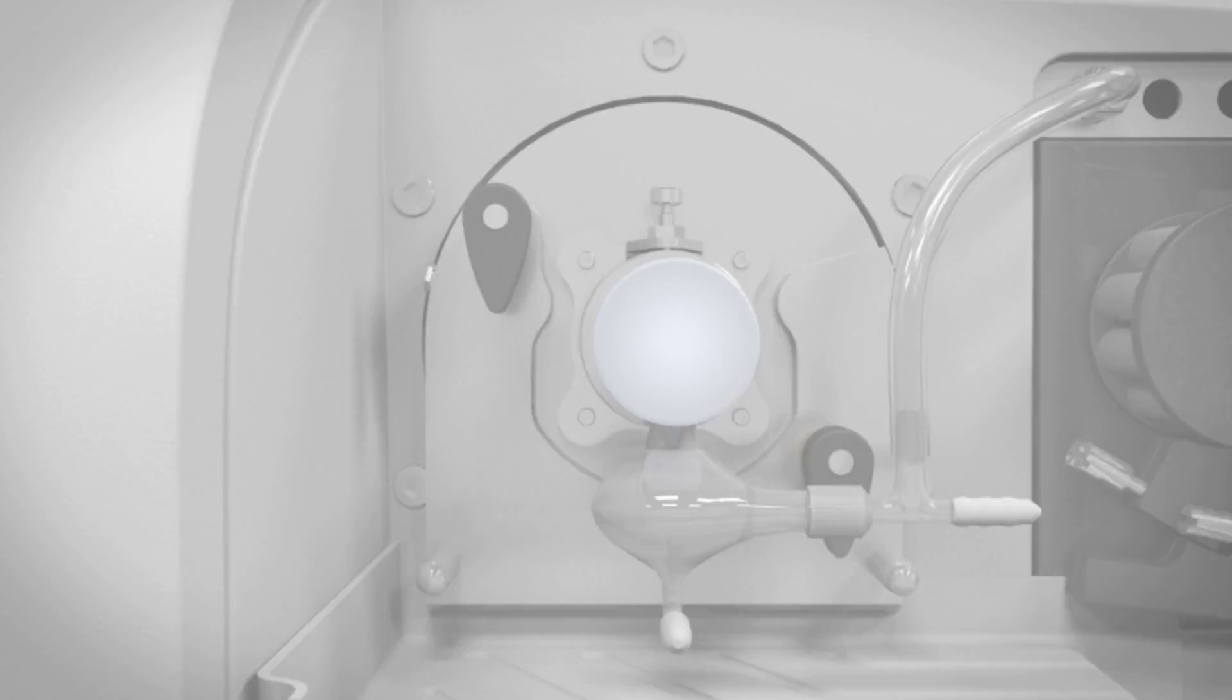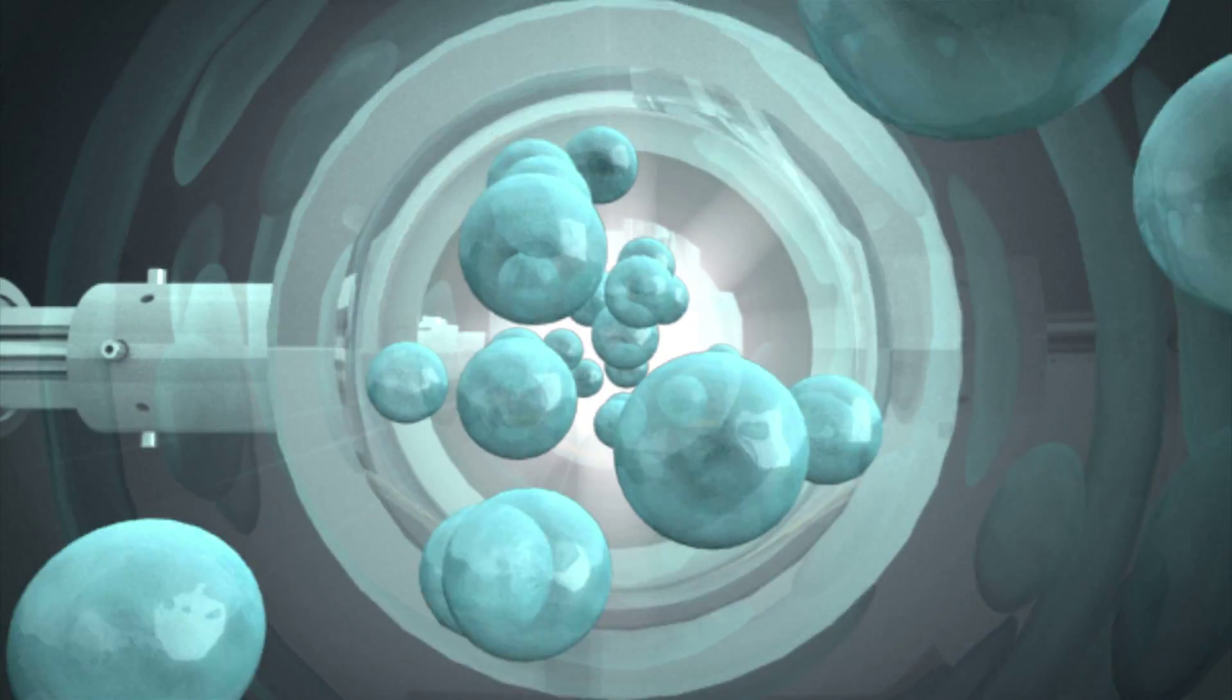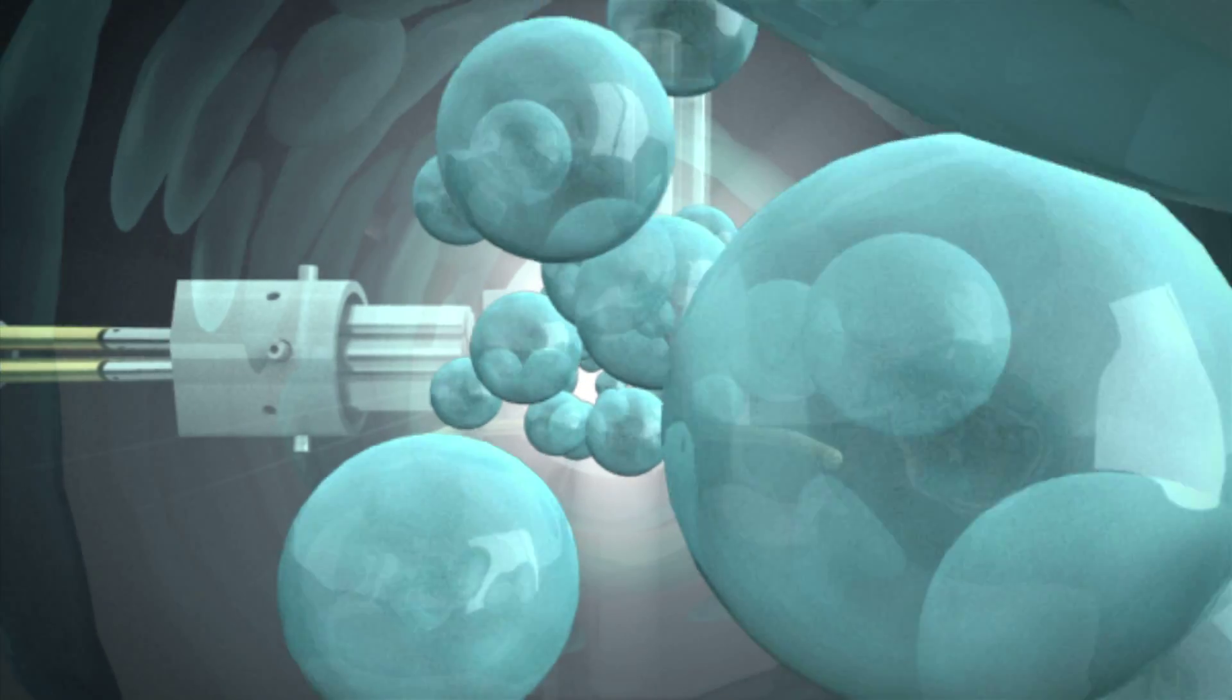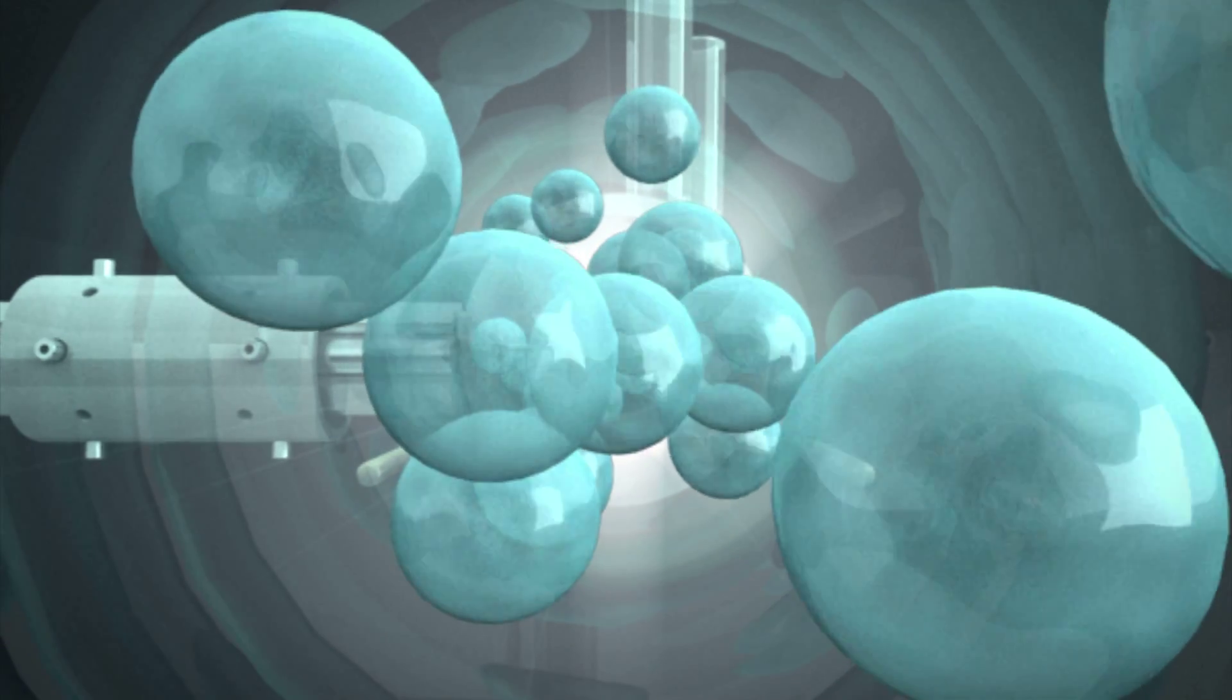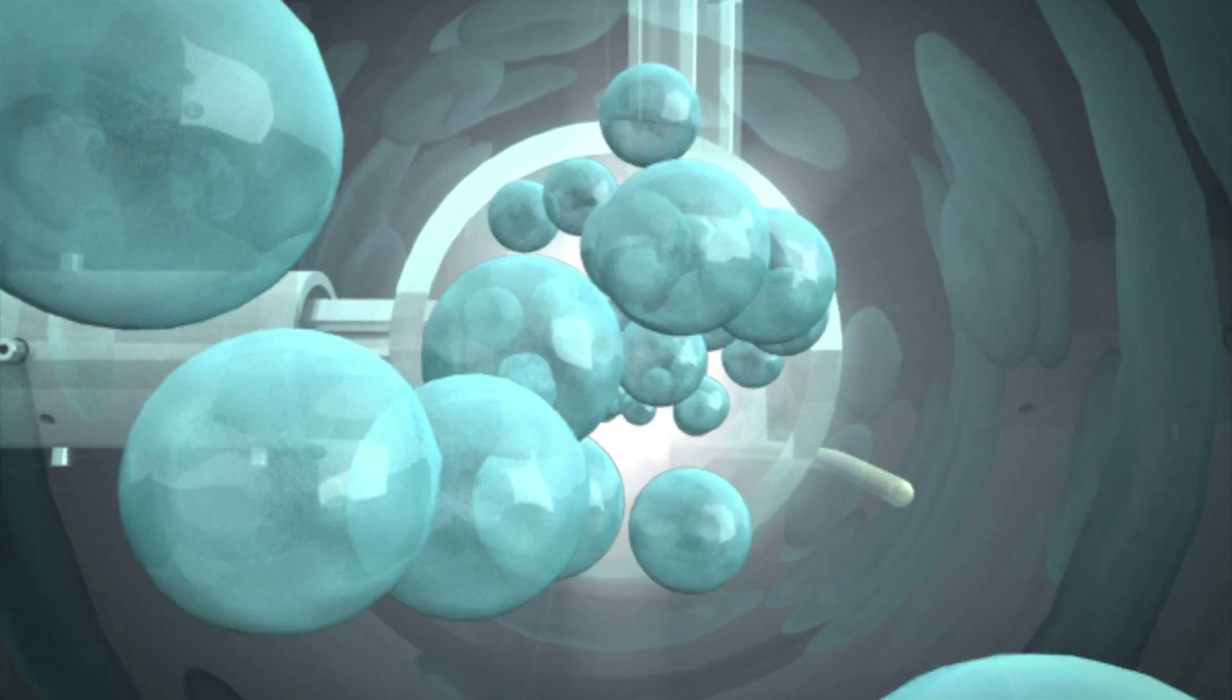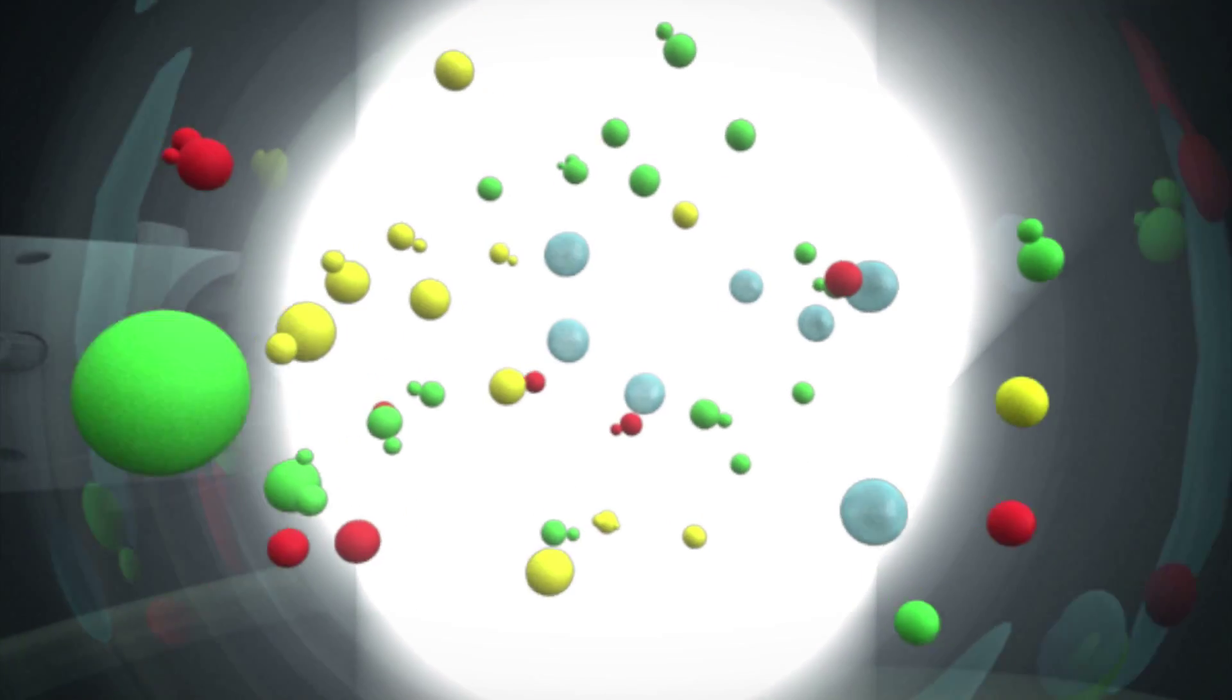Once your sample is introduced and has been converted into a fine aerosol in the spray chamber, it passes into the torch and through the argon plasma. Sustained by the most powerful and reliable RF generator in the industry and precisely aligned with a fully automated X-Y-Z adjustment capability, the plasma dries, atomizes and ionizes the sample.